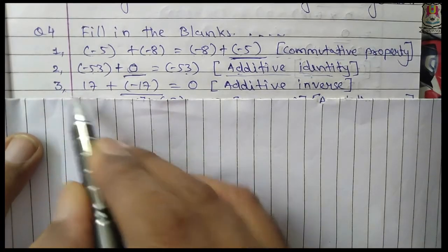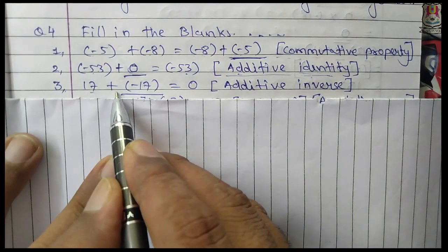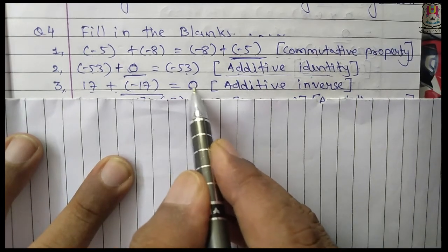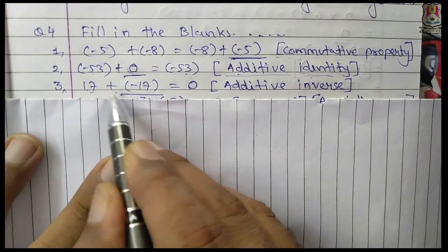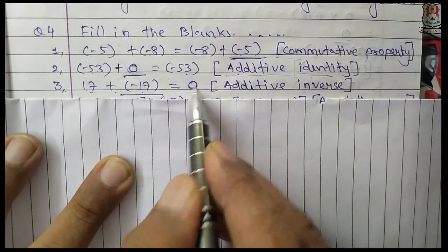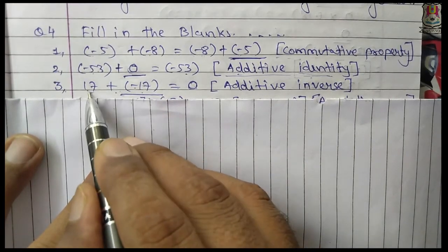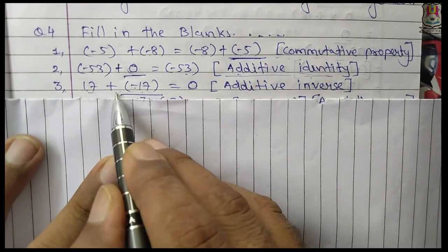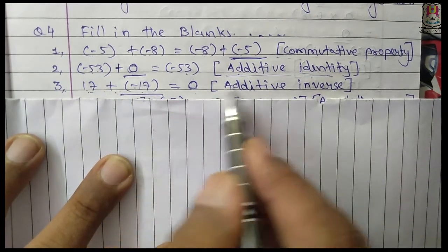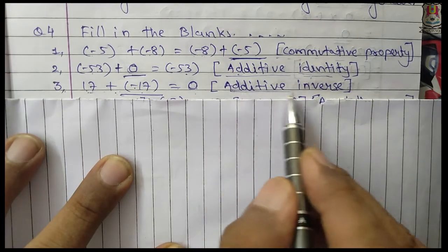Number 3: 17 plus blank equals 0. The answer is minus 17, because 17 plus minus 17 equals 0 — plus minus is minus, and 17 minus 17 equals 0. The property used here is additive inverse.